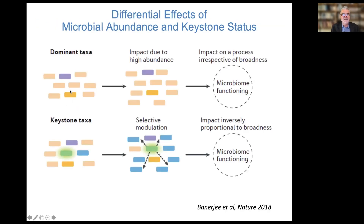There are two ways that healthy microbiome functioning can result. One is an abundance of certain taxa that impact all the other players in the system through their abundance. The other mode involves keystone taxa, which can be present in small numbers but influence multiple other players in an ecosystem, thereby inducing a healthy microbiome.